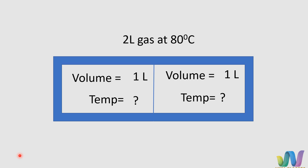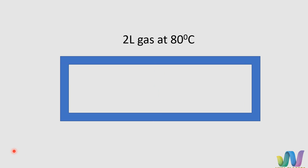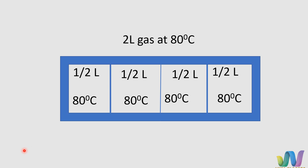The temperature will be 80 degrees Celsius, and the volume becomes half a litre. But the temperature will continue to be at 80 degrees Celsius. You can understand from this example.